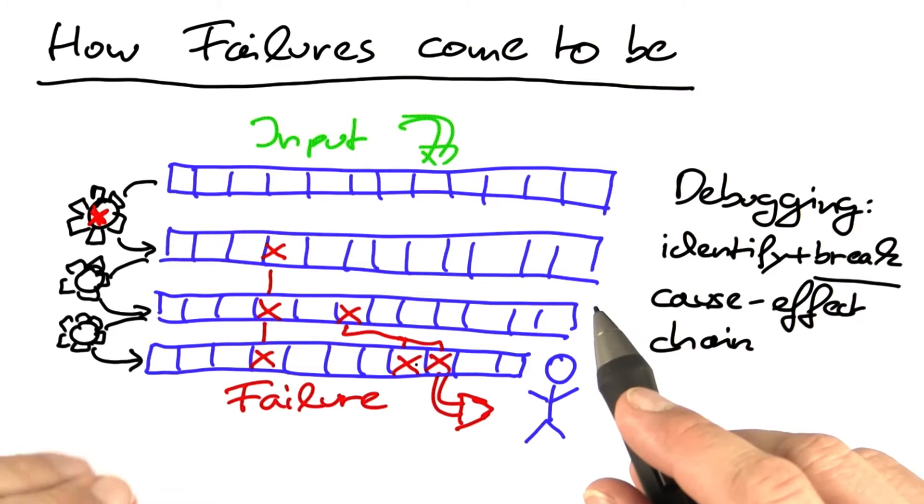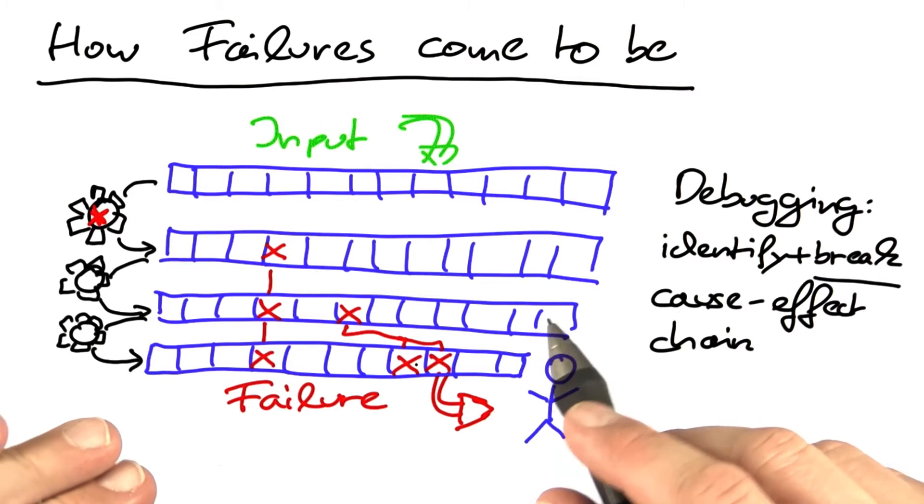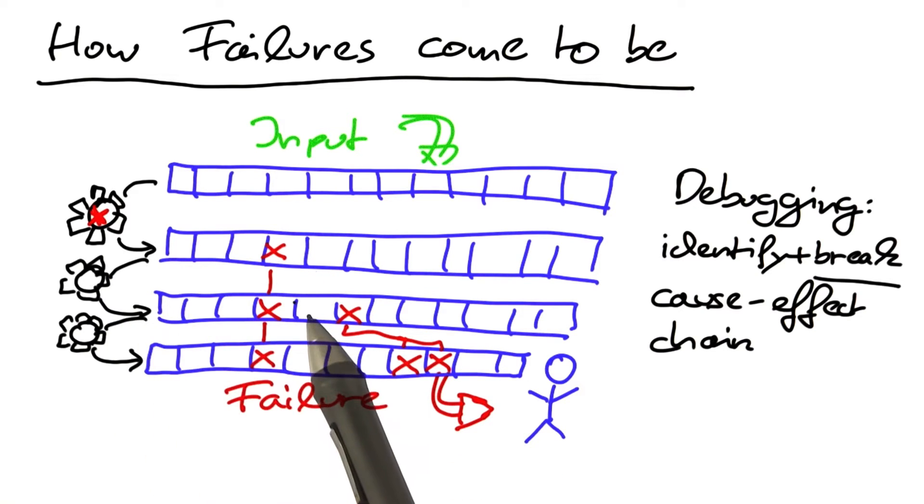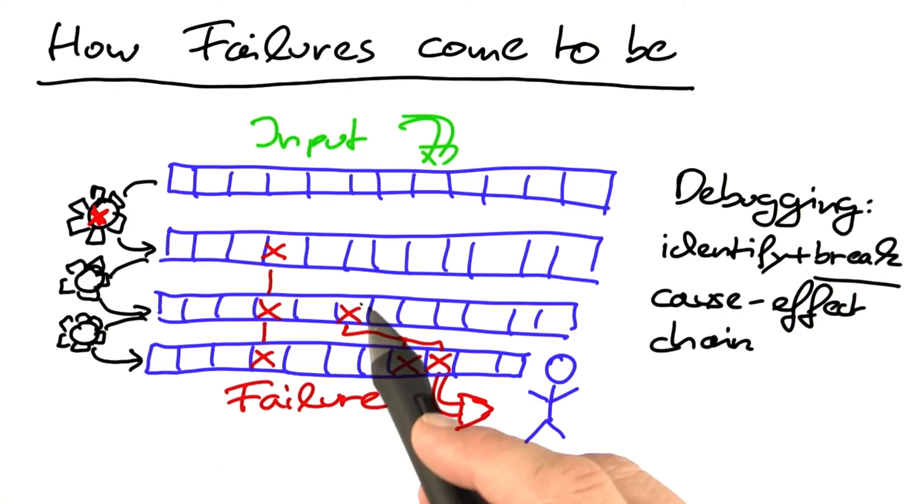So all of this looks very simple. However, in real life, it's much more complicated than that. To start with, not every defect automatically causes a failure. It may well be that the defect causes an infection, which later simply is not propagated. So the infection is not propagated and never becomes visible to the user. It may not even cause a failure at all.